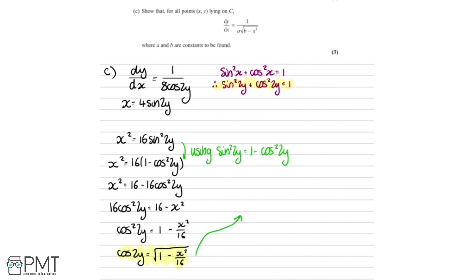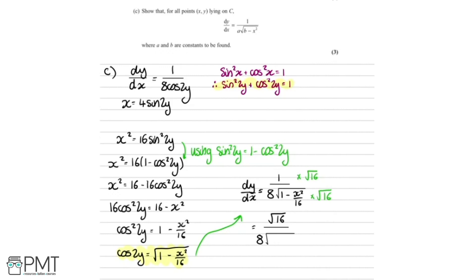We've now got an expression for cos 2y, so substituting into dy by dx equals 1 over 8 cos 2y, we get dy by dx equals 1 over 8 times the square root of 1 minus x squared over 16. To simplify, we multiply the top and bottom by the square root of 16. The square root of 16 is 4, giving 1 over 2 times the square root of 16 minus x squared. So A equals 2 and B equals 16.